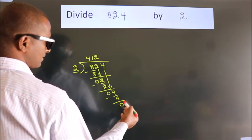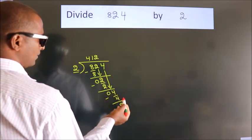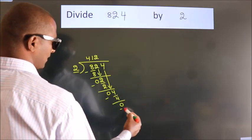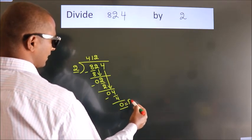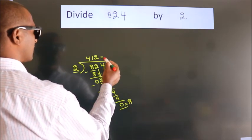After this, no more numbers to bring it down. So we stop here. This is our remainder. This is our quotient.